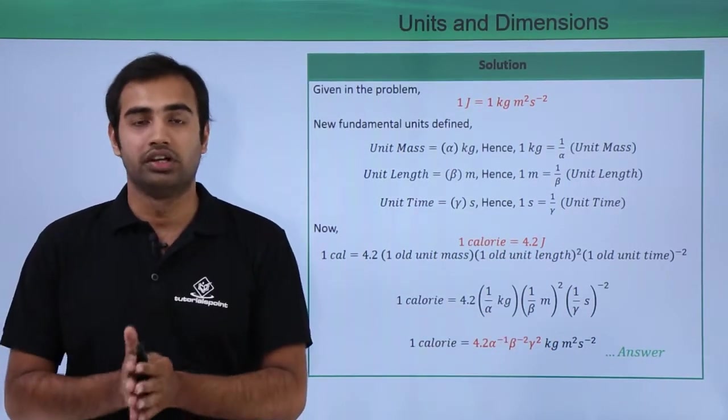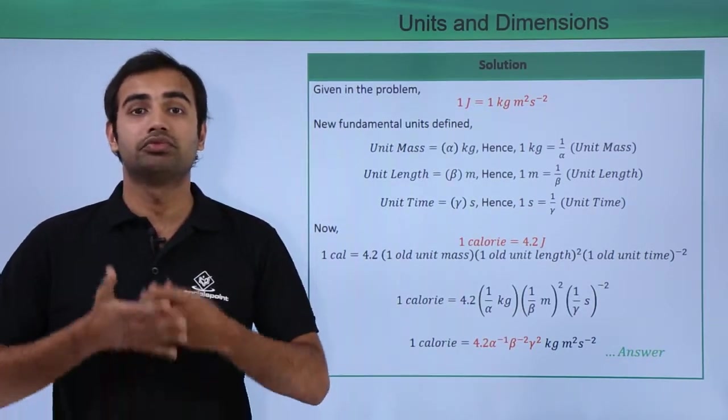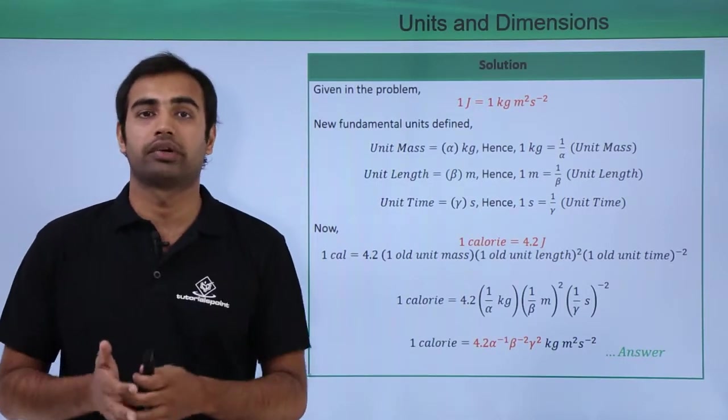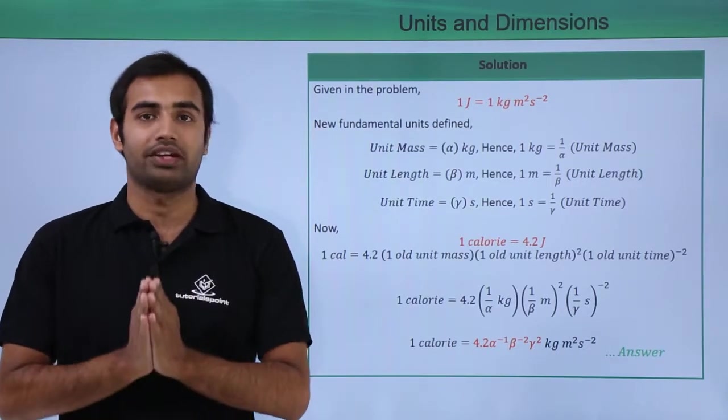So, I am able to prove that 1 calorie in terms of new units comes out to be 4.2 alpha raised to the power minus 1, beta raised to the power minus 2 and gamma raised to the power 2. I hope this is very very clear to you. Thank you.